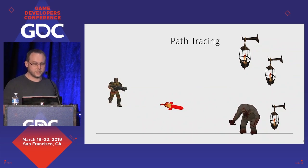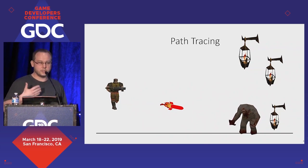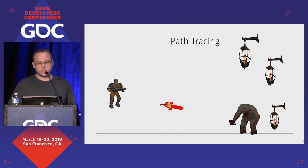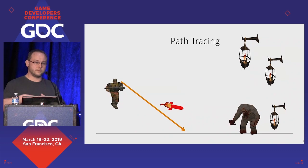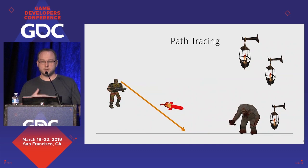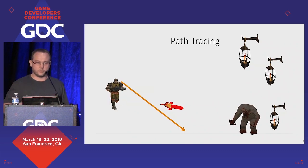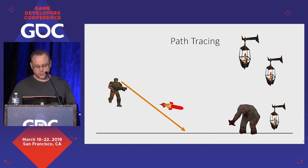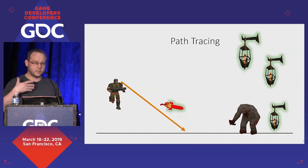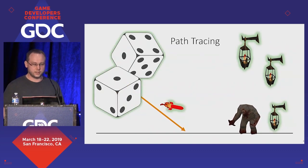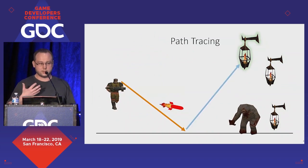Path tracing is a method for constructing light paths. It's a physically based method and it works by starting from the eye of the observer: you cast a ray to find the primary visible surface, which is also what you would do with the rasterizer in a game. Then at the hit point you perform next event estimation, meaning you stochastically select one of the light sources — which can actually be physically based area light sources of any shape. You take all candidates, perform stochastic sampling, and select one candidate to compute the shadow ray.